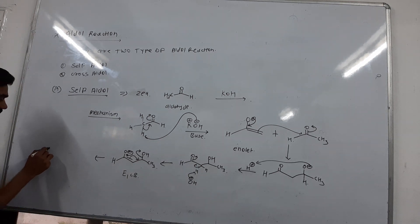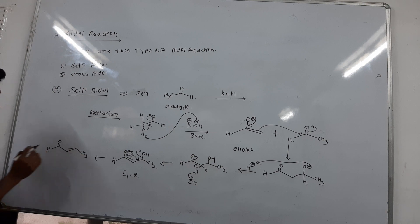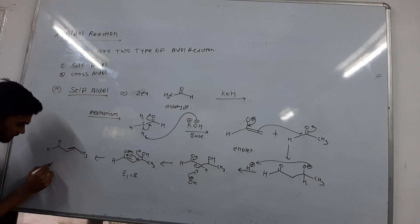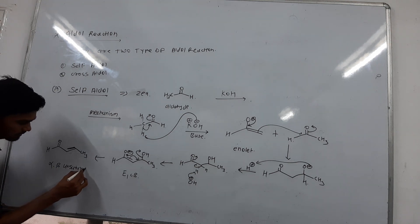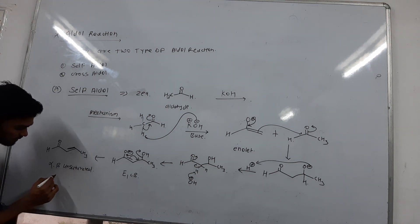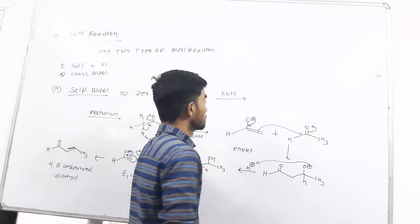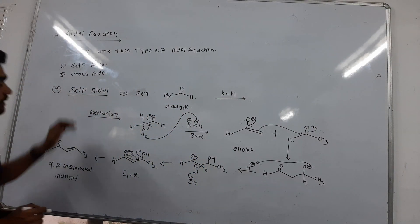The product is an alpha-beta unsaturated aldehyde. The product of self-aldol reaction is alpha-beta unsaturated aldehyde. This is the self-aldol reaction. Next is the cross-aldol reaction.